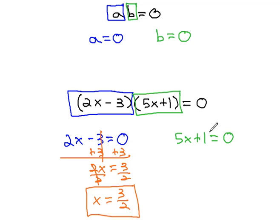Or in the second equation, subtracting 1, giving us 5x equals negative 1, and dividing by 5, giving us x equals negative 1 fifth.